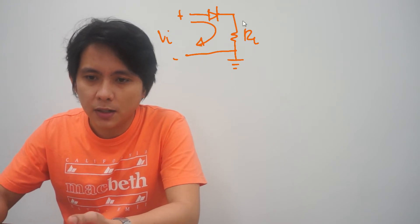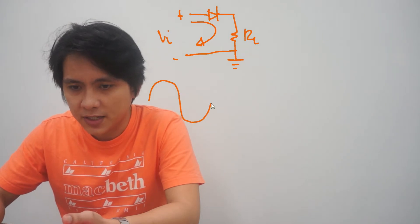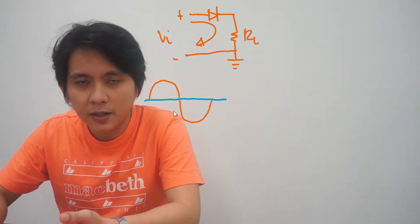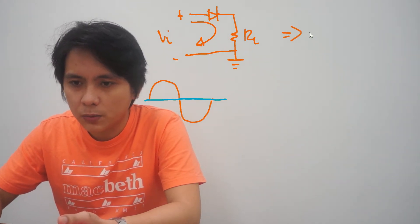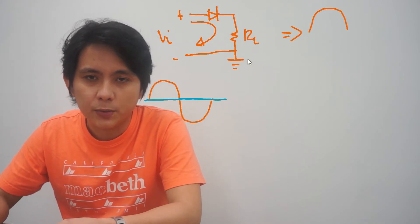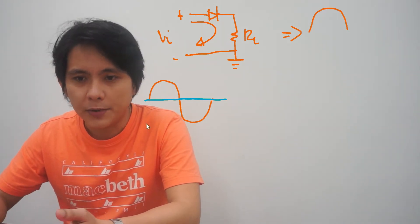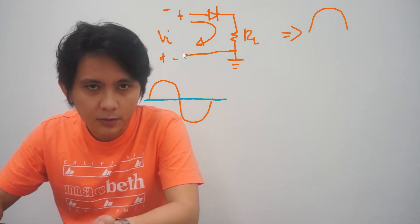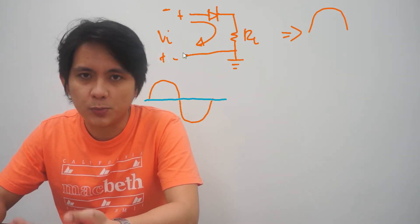For the first cycle of the signal, which has a graph something like this, this part here—the positive cycle—our output here is also a positive value of the input voltage. As the polarity changes, the positive on top will now become negative and the bottom will become positive because that's the way AC signal behaves. It changes polarity every time.